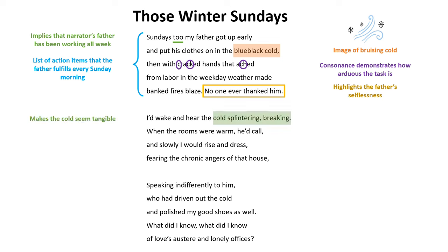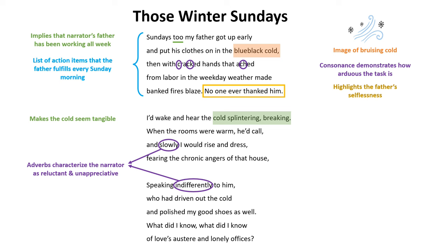In this highlighted portion, the narrator makes the cold seem tangible when he creates a picture of his father breaking the cold. As the reader, we can almost hear the wood popping and crackling in our minds, and this detail places us in the narrator's shoes. We have multiple adverbs, such as 'slowly' and 'indifferently,' which are descriptive words that characterize the narrator as reluctant and unappreciative. These adverbs provide more insight into the narrator's lack of enthusiasm when talking to his father as a child, not realizing that he, too, was contributing to the emotional coldness and distance in this household.